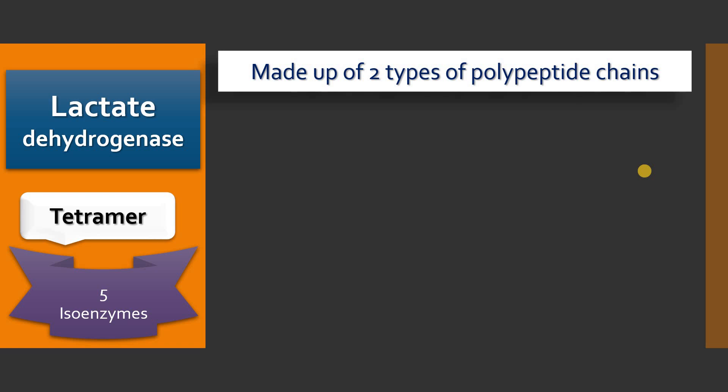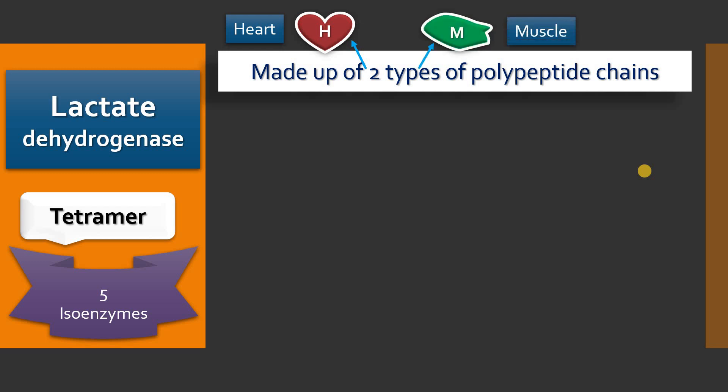The first type is H-type, which represents heart. The other is M-type, or muscle type. These two polypeptide chains or subunits arrange in a tetramer — meaning that in any given isoenzyme of lactate dehydrogenase, there are four subunits, either H-type or M-type or both.